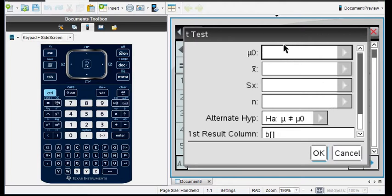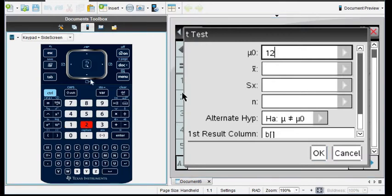So now we're going to go through and we're going to put in all of the values that we had from our previous screen. So our mu-naught was 12 because that was the value that was in our null hypothesis. X bar was 11.25. The sample standard deviation, the Sx, represents the sample standard deviation is 2.5. N is 40.